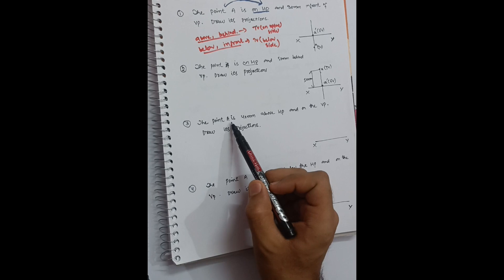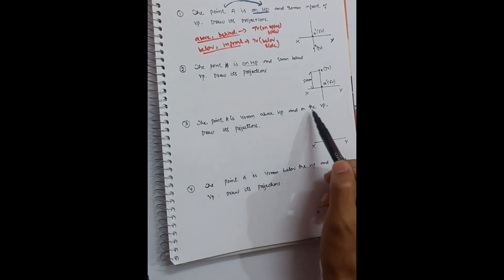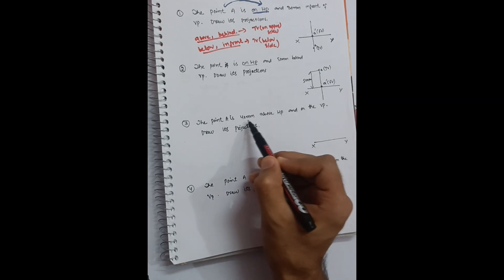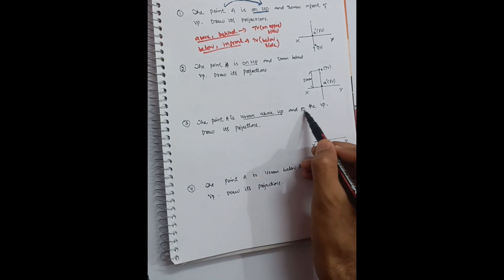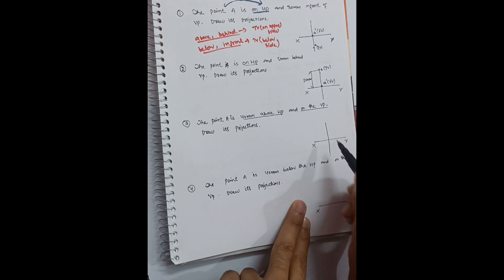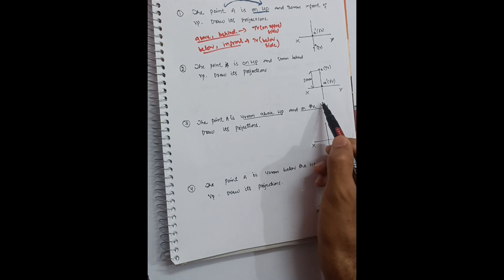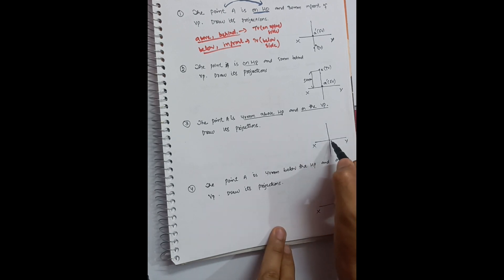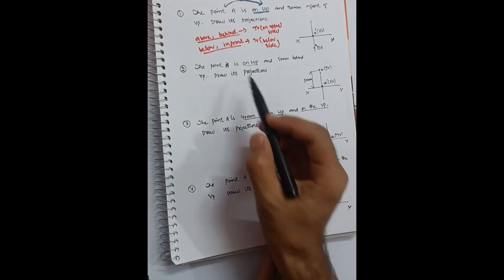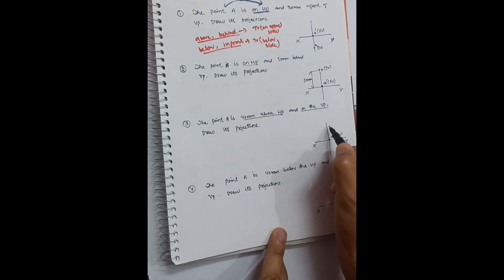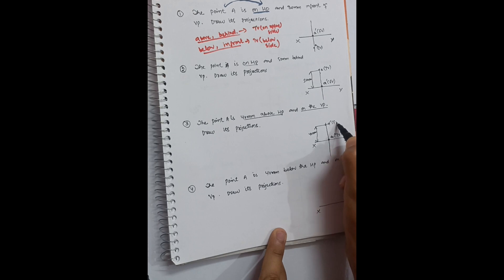Next problem: point A is 40 mm above HP and on VP — draw its projections. First, since the point is on VP, the relationship is with VP, so that is your top view — draw it on the reference line. Now for the front view: the relationship is with HP (40 mm above HP). Since it is 'above', draw the front view on the upper side of the reference line at 40 mm.